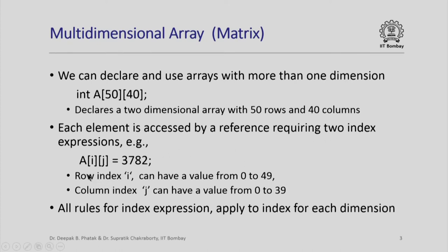Each element of this two-dimensional array is accessed by a reference which will now require two index expressions. For example, A[i][j] will mean ith row and jth column element. Suppose its value is 3782, then the ith row jth column element will be assigned this value. We note that row index i can have a value from 0 to 49 because the size of the first dimension is 50. Similarly, the column index j can have a value from 0 to 39. Naturally, all rules for index expression apply to index for each dimension.